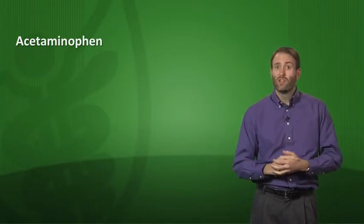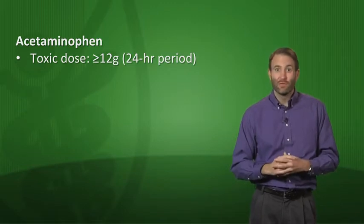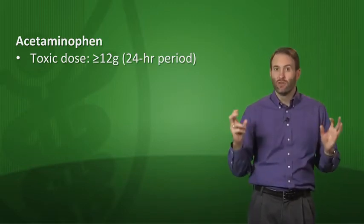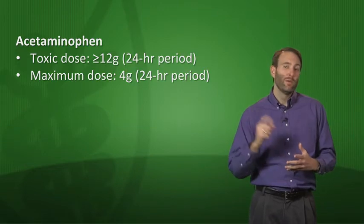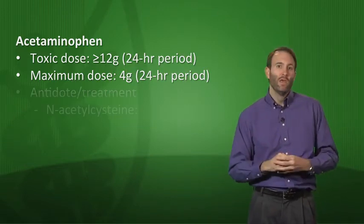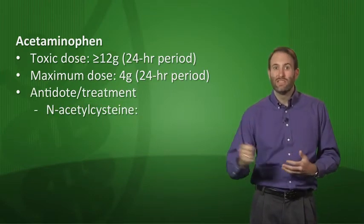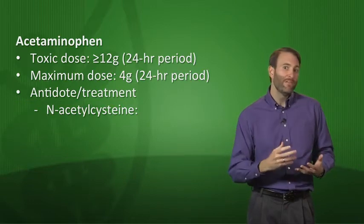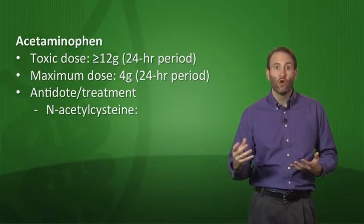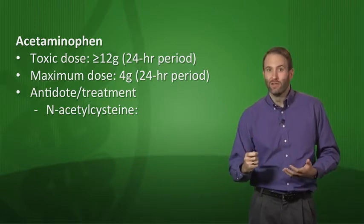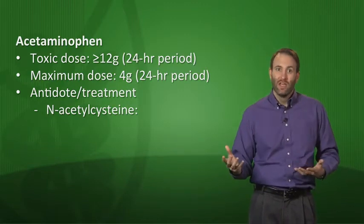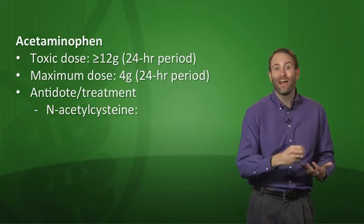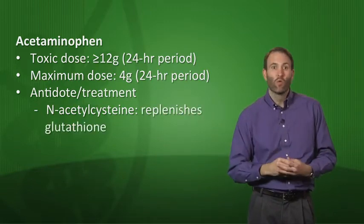Let's move on to acetaminophen, found in nearly every household. What's the toxic dose? At least 12 grams or 12,000 milligrams in a 24-hour period is considered toxic when you start seeing lots of medical problems. The recommended maximal dose though is less than that, 4 grams in a 24-hour period. The antidote for this is N-acetylcysteine. Why does it work? When the body receives too much acetaminophen, a toxic metabolite is produced called N-acetyl-p-benzoquinone imine, or NAPQI. Too much NAPQI will damage hepatocytes. Usually this metabolite is conjugated by glutathione. N-acetylcysteine works by replenishing the glutathione.